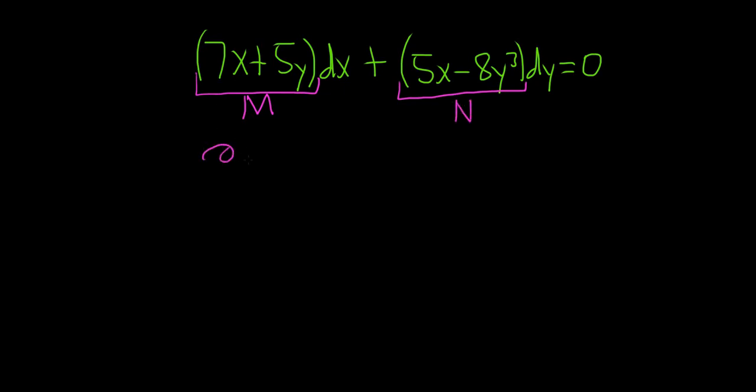Then you compute del M del, and it's the other variables, so there's an x here so we're going to compute del M del y. This is the partial derivative of M with respect to y. When we compute this we treat all of the x's as constants, so the derivative of 7x is 0 and the derivative of 5y is 5.